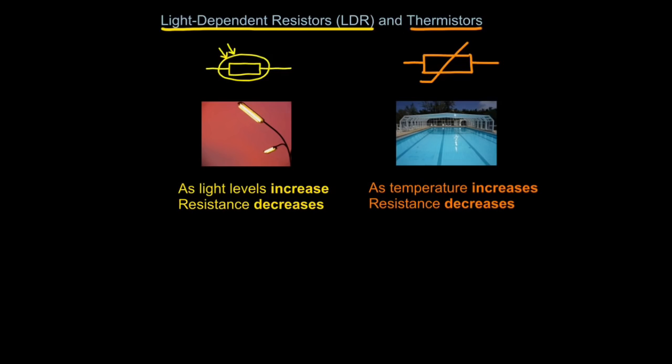Thermistors do the same but in terms of temperature. So as temperature increases, the resistance in the thermistor decreases. In other words, if the device is hot, resistance is low. If the device is cool, resistance is high. Now, it's quite easy to get muddled in an exam and forget which way is which, but remember this: LDR - light up, resistance down. And just remember for thermistors: temperature up, resistance down.